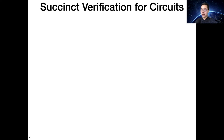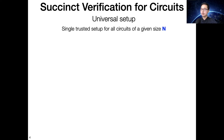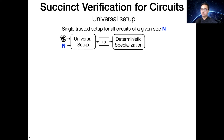Another option is to use the universal setup. How it works is that you have a single trusted setup for all circuits of a given maximum size N that you want to support. It outputs a reference string, and you feed the reference string and actual circuits into a deterministic specialization process to get the circuit-specific proving key. This specialization process includes no randomness and is entirely deterministic, so you only have one setup and use the reference string for all circuits.